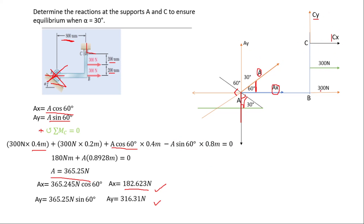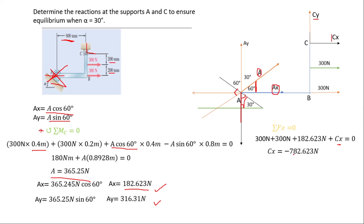To find Cx, we resolve forces in the x-component using equilibrium: the sum of forces in x equals zero. The 300-newton forces and Ax are all in the positive x-direction, so we get 300 + 300 + 182.623 + Cx = 0. Solving, Cx = −782.623 newtons. The negative sign means Cx acts in the opposite direction to what we assumed.